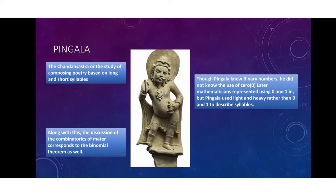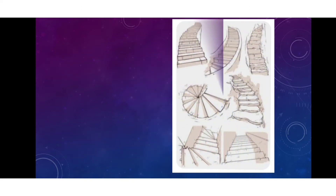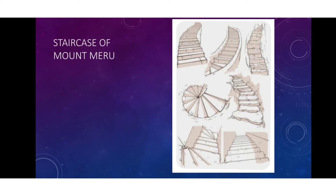We know that binary numbers are 0 and 1, used to create a statement. But the concept here is light and heavy — light means lighter, heavy means a heavier syllable. Light and heavy are the two concepts used, and the syllable concept explains this exactly. The idea is Mount Meru, where staircases are used for construction — these are the Mount Meru steps.